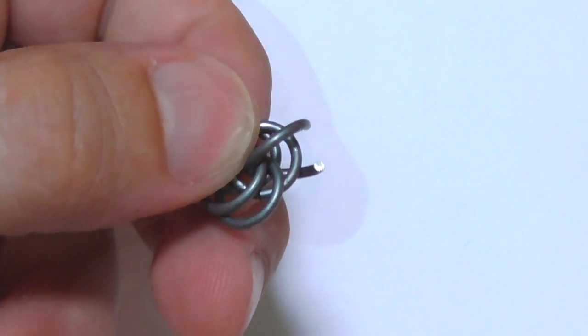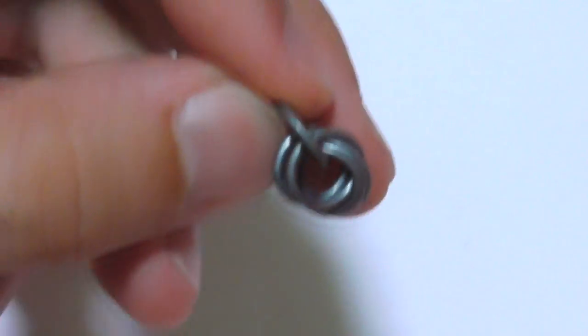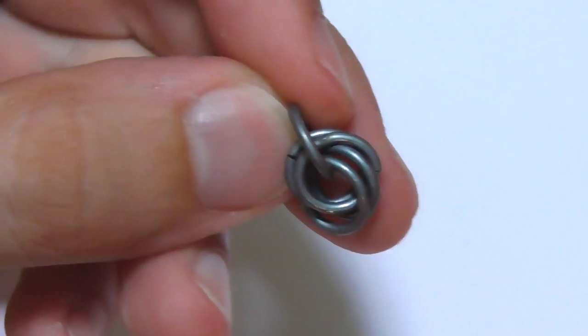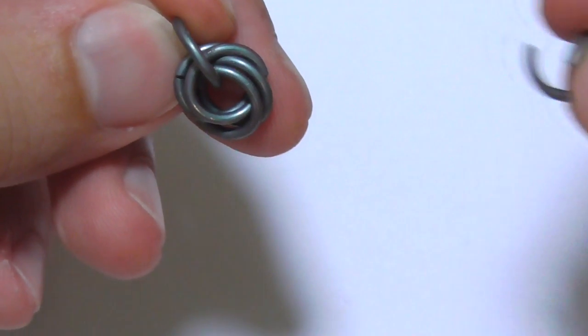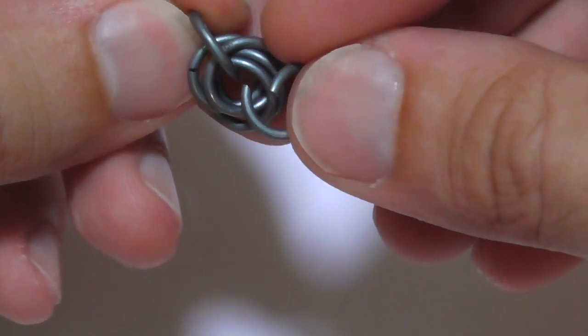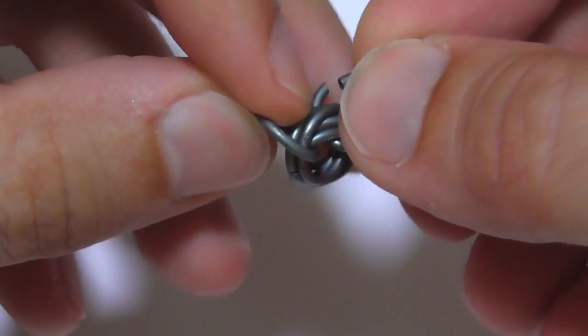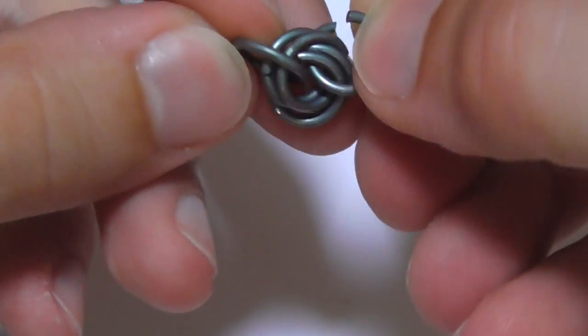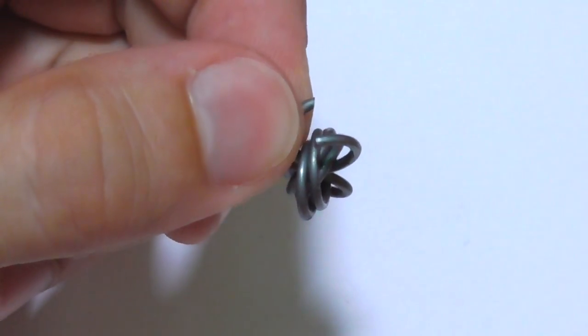Let's take another open ring and put it right in the eye here. Let's close it. Now let's add another open ring just like previous one. Let's close it.